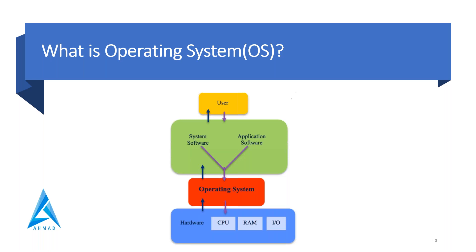Without an OS, this computer or server is like a dumb terminal — it can't do anything. Whenever you are buying a laptop you have the OS that is inbuilt. Mostly we have Microsoft Windows operating system, then we have Mac from Apple, then we have Linux from Red Hat, and then there are some other operating systems like Solaris from Oracle and AIX from IBM. So these are the popular operating systems in the market.